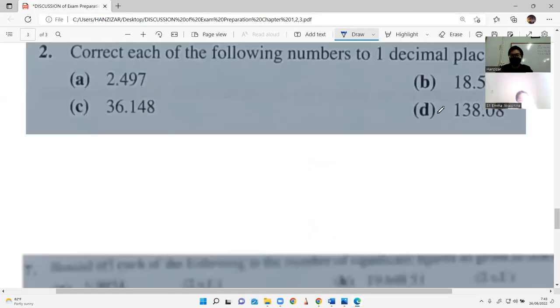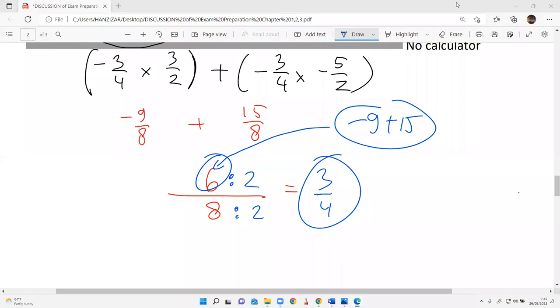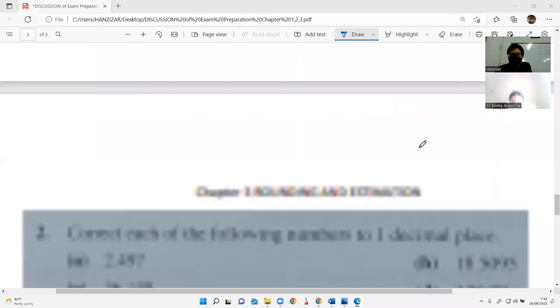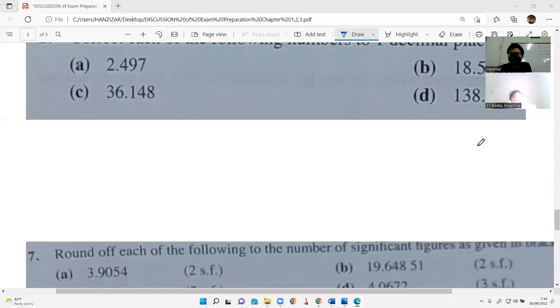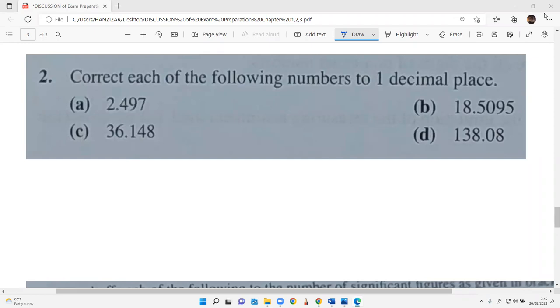This is getting easier. Last chapter, last but not least. I hope this is the easiest part you're gonna have. Problem 28, part A: correct to 1 decimal place. So 2.497, 1 decimal place is here. Does it increase? Yes, the next digit is 9, so 2.5. Done, easy. Also applied on parts B, C, D, and so on.